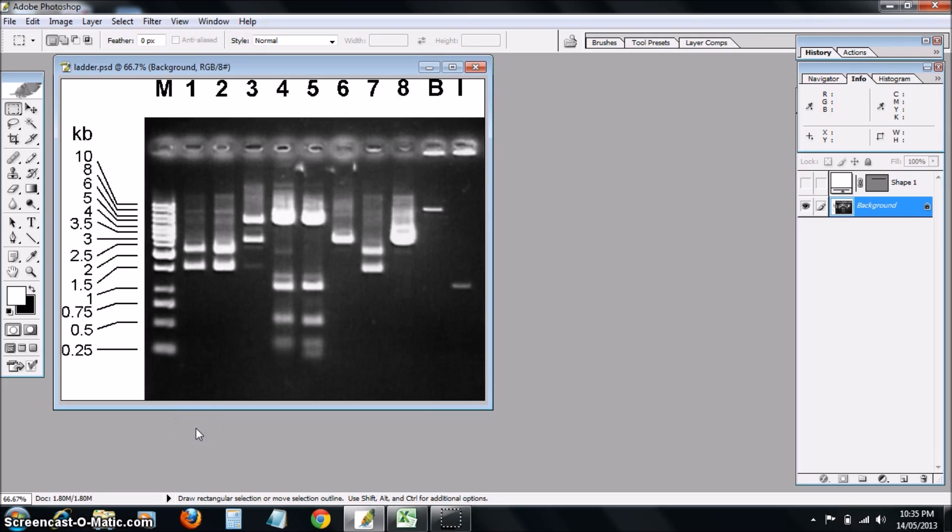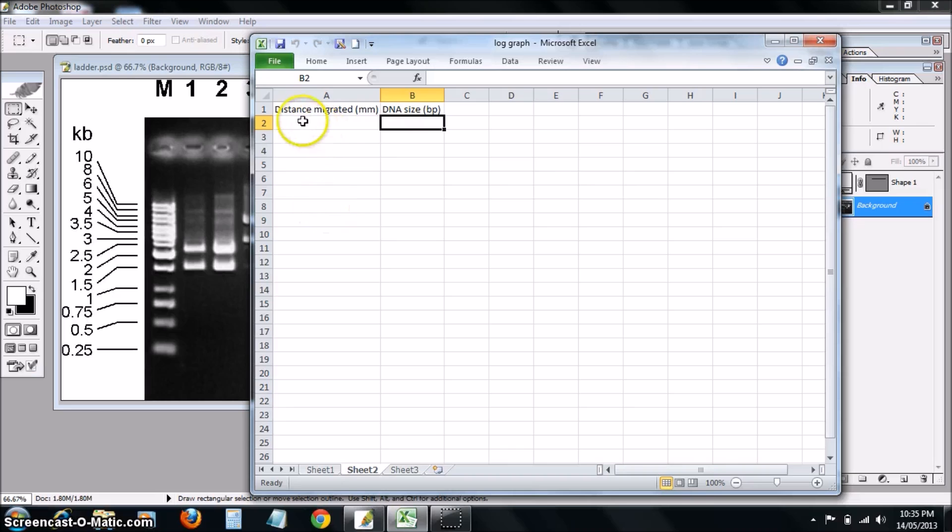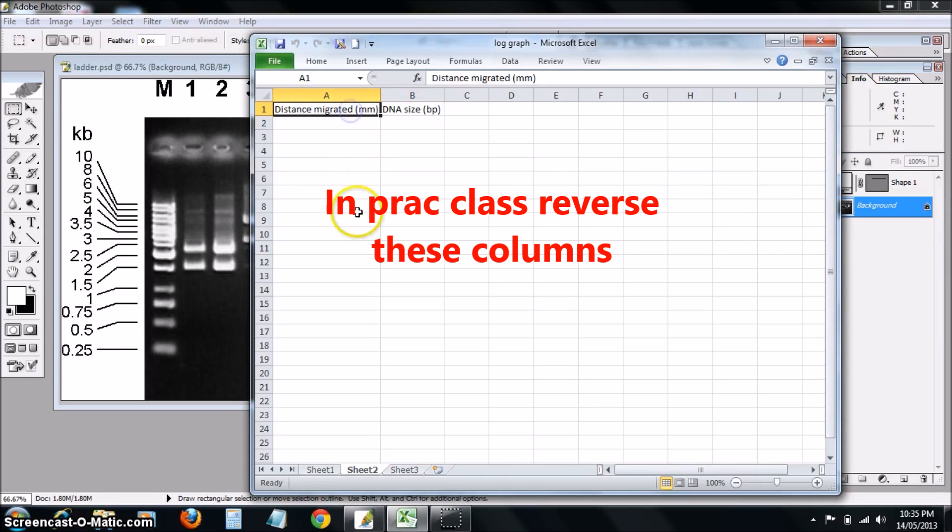To do the first part, you should open up an Excel file. You will measure the distance migrated for each of these DNA fragments and link that up to the DNA size in base pairs.